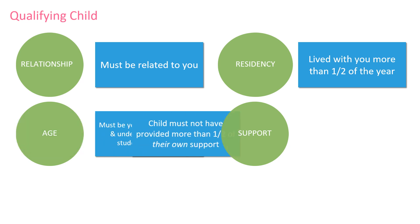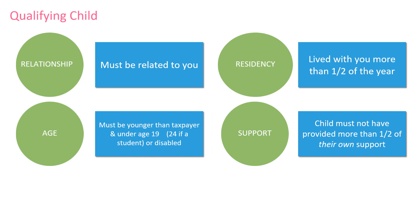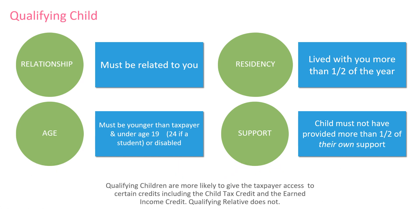Support: to meet this test, the child cannot have provided more than half of their own support during the tax year. This question usually gets a laugh from most parents. This means the child cannot have provided more than half the funds spent towards their basic living expenses. This would not prevent a child who happens to have a lot of income from being claimed, so long as they do not spend their own money on basic living expenses like food and shelter. Having a qualifying child on your tax return is generally more beneficial than a qualifying relative due to credits like the child tax credit and earned income credit.